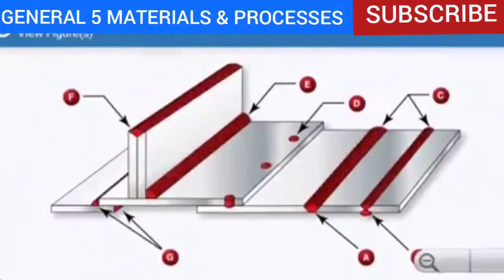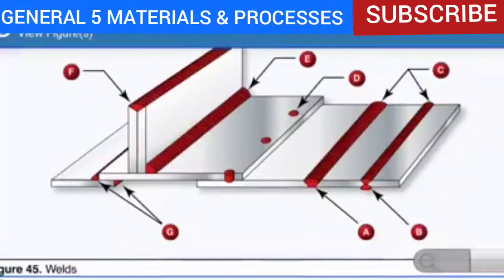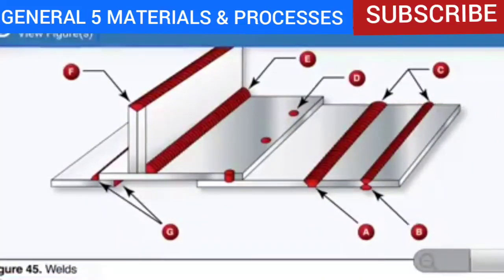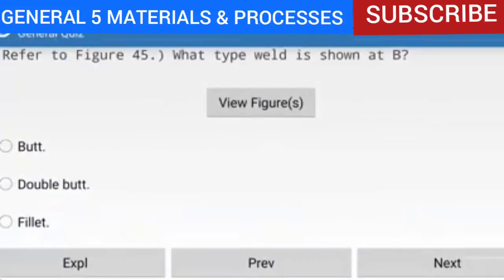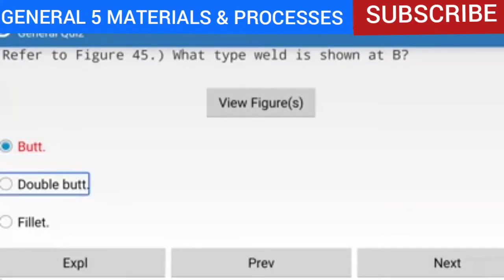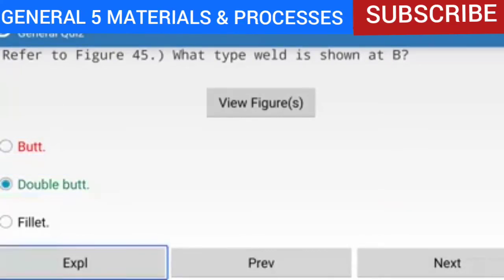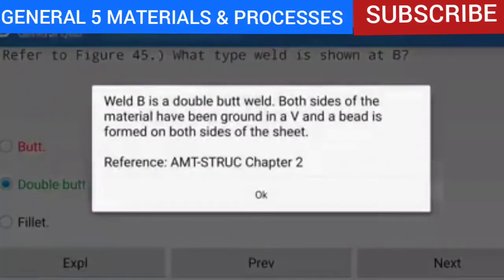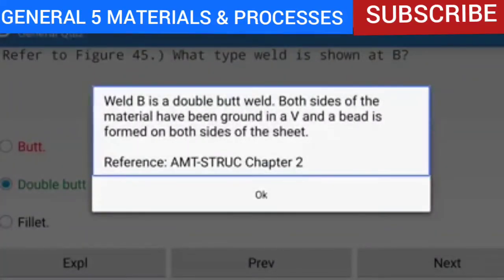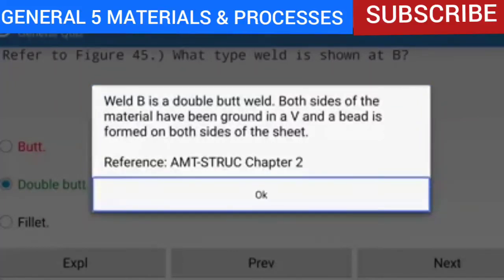Question 79 of 95: Refer to figure 45 — what type weld is shown at B? The answer is a double butt weld. Both sides of the material have been ground in a V and a bead is formed on both sides of the sheet. Reference: AMTSTRUC Chapter 2.